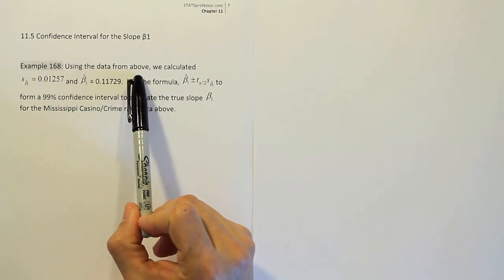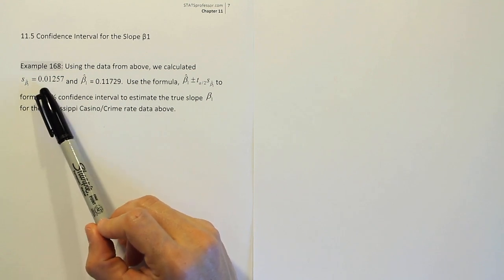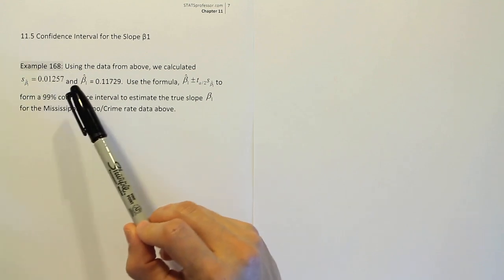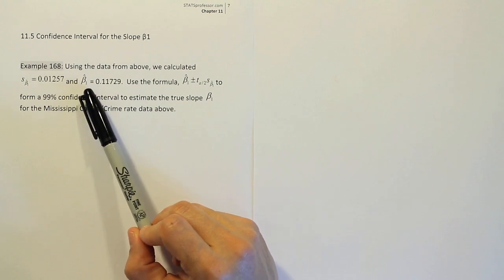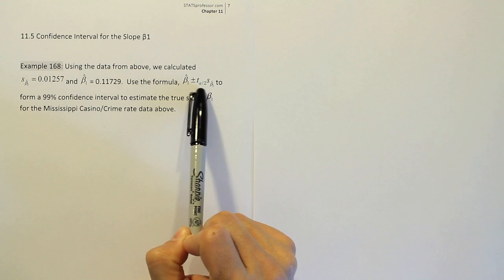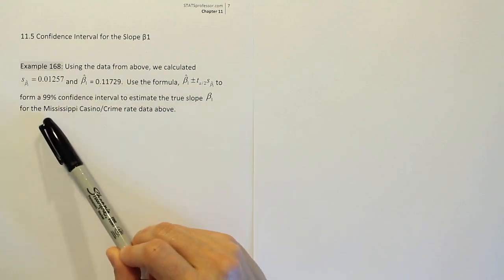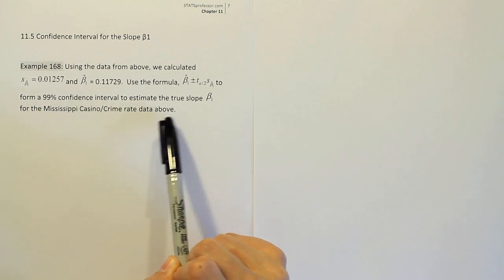Example 168. Using the data from above, we calculated the standard error for the slope estimator to be 0.01257 and we found the slope estimator beta 1 hat to be 0.11729. We used the formula given here to form a 99% confidence interval to estimate the true slope beta 1 for the Mississippi Casino crime rate data above.